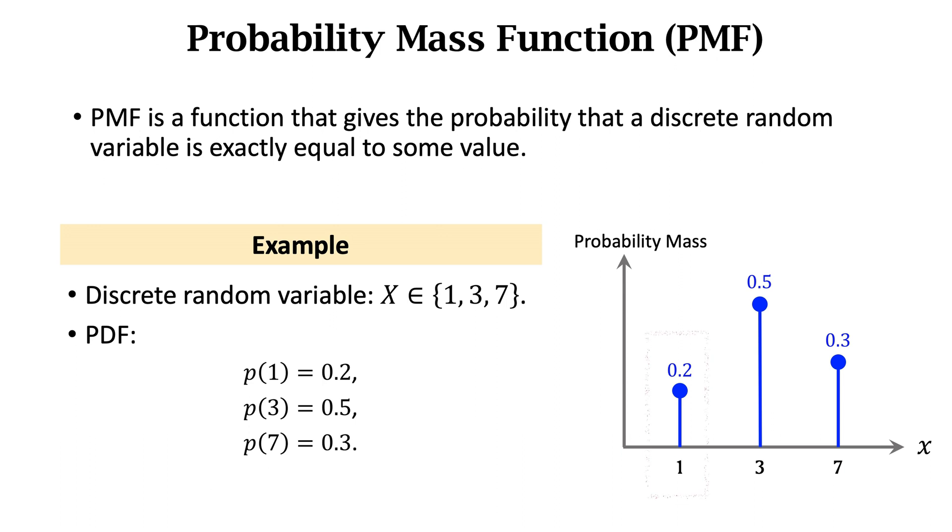Look at the figure. With probability 0.2, x takes value 1. With probability 0.5, x takes value 3. With probability 0.3, x takes value 7. Elsewhere, the probability mass is 0.